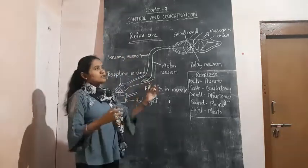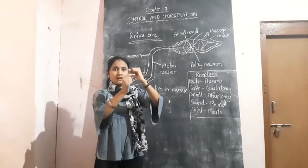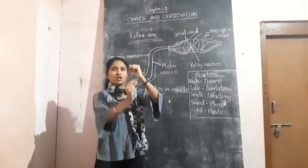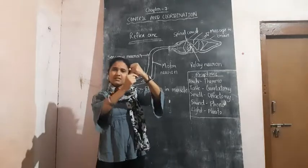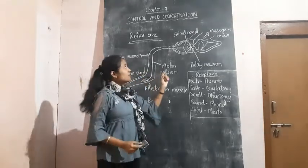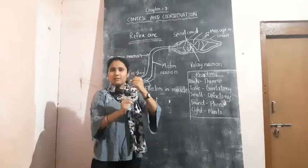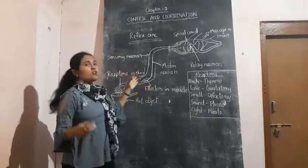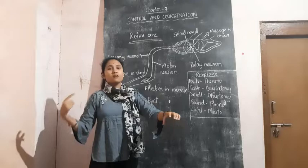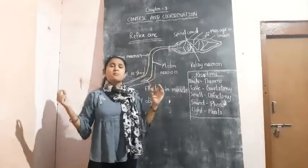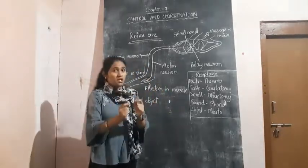If you consider this is the brain, then there will be a rod-like structure attached just below the brain — that will be your spinal cord. That means all these nerves from our body, they reach the brain. But before reaching the brain, they will go through the spinal cord.